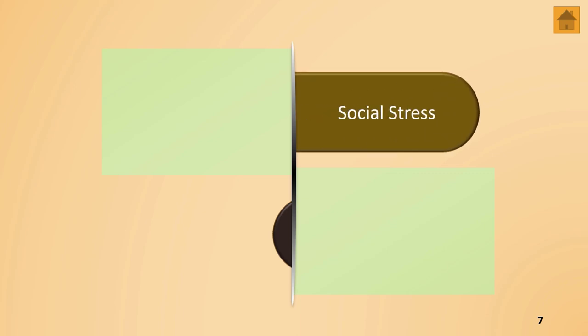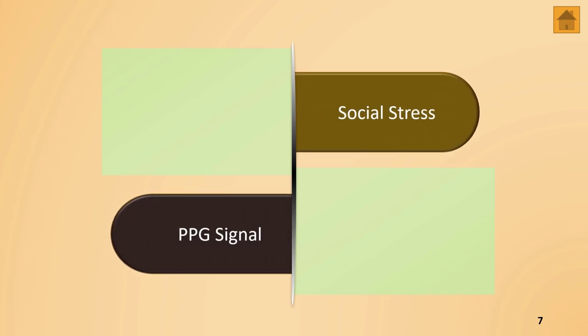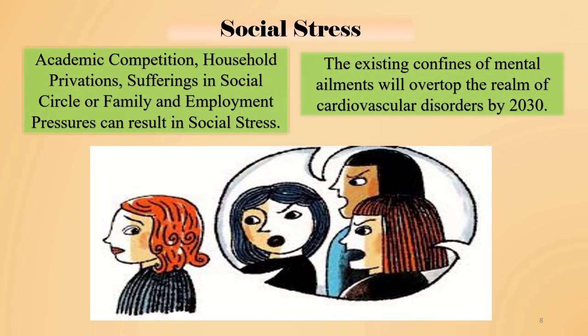Moving to the introduction — as mentioned in the title of the paper, we discuss two things: social stress and PPG signals. Social stress is endured by almost all students as a result of academic competition, household worries, sufferings in social circles, and unemployment pressure. According to WHO, at the rate mental ailments are burgeoning, by 2030 the world will have more mentally depressed patients than cardiac patients, who top the list nowadays.